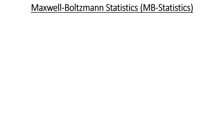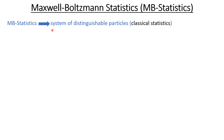Assalamu alaikum. After discussing the Bose-Einstein statistic and Fermi-Dirac statistic, today we are going to discuss the Maxwell-Boltzmann statistic. The Maxwell-Boltzmann statistic is applicable to a system of distinguishable particles. In Bose-Einstein and Fermi-Dirac statistics the particles were indistinguishable, whereas here we use a system of distinguishable particles. This statistic is also known as the classical statistic because it does not follow the quantum condition of distinguishability.